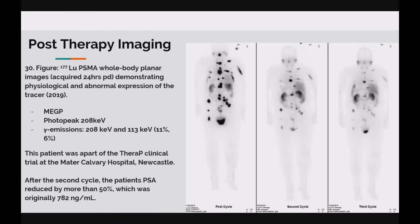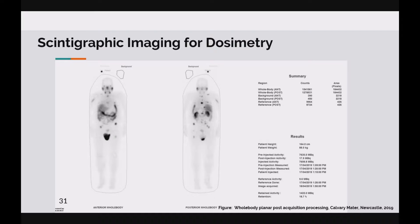These images are of a patient involved in the Peter Mac therapy trial undertaken at Calvary Mater Hospital, Newcastle. Before his first cycle, the patient complained of significant bone pain, and after the first treatment he had issues with prolonged nausea. Upon return for his third cycle, the patient did not report any significant problems. Imaging usually commences 24 hours after administration. Medium energy collimators are used with a photo peak of 208 keV. Retention data is obtained with regions of interest around the whole body, reference activity and background, which gives the retention value when formulated with the injected activity and other contributing factors. This patient's third cycle had a retention value of 18.7.